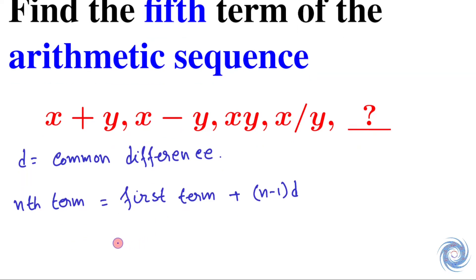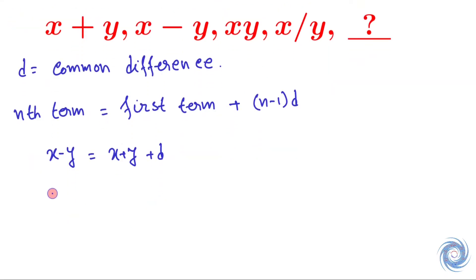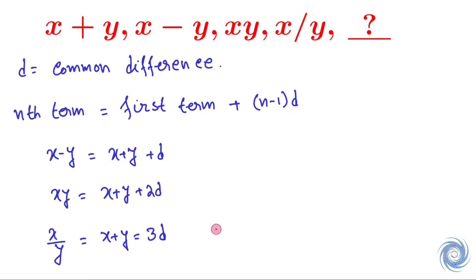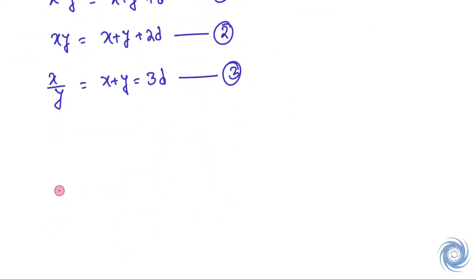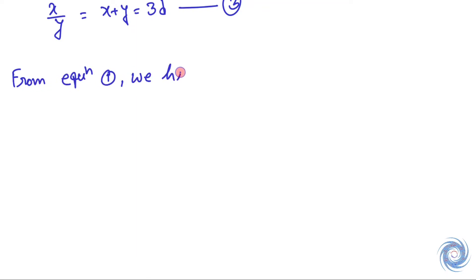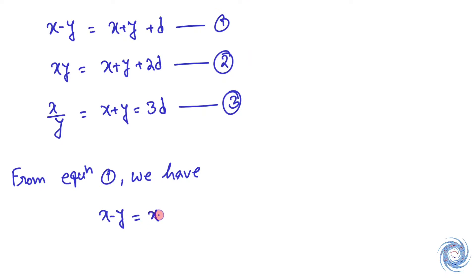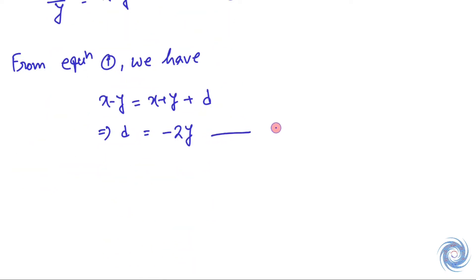Using this relation, we have three equations. Let us give them names. We have three unknowns x, y, and d, and three equations, so we can definitely solve for x, y, and d. From the first equation, we get d equals minus 2y. Let us take this as equation 4.